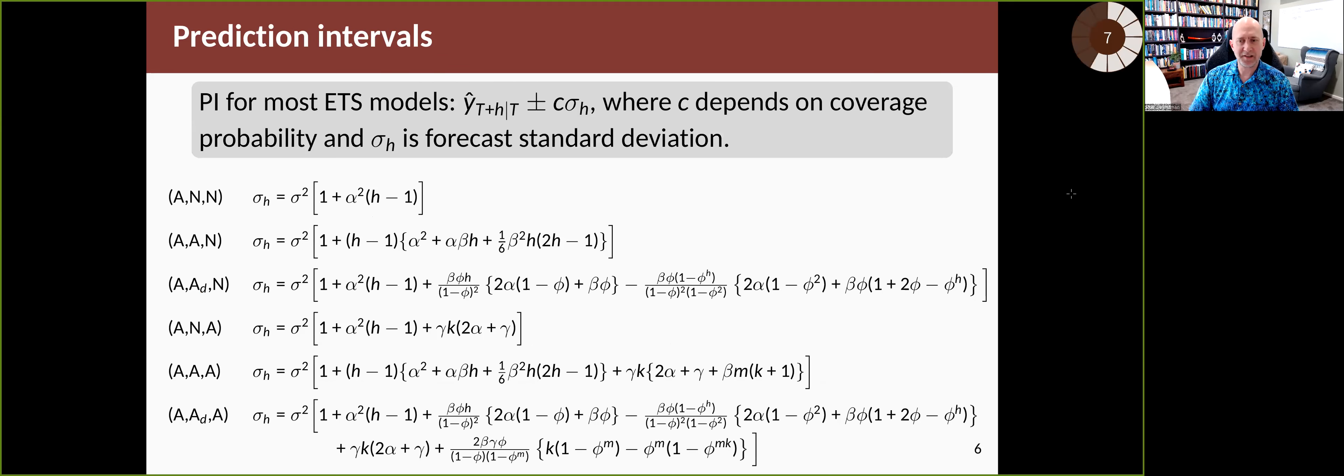Here are some of those exact formulas for simple additive models. The first one is for no trend, no seasonality, but additive error—this is simple exponential smoothing. It's given by this relatively simple expression. When h equals one, that term disappears and you've got sigma squared.